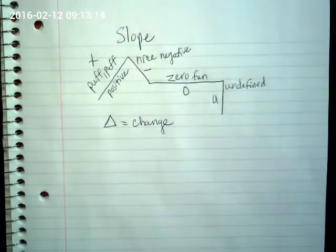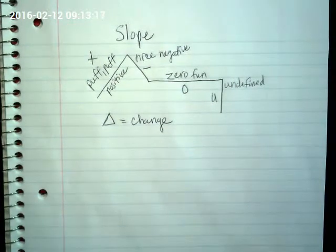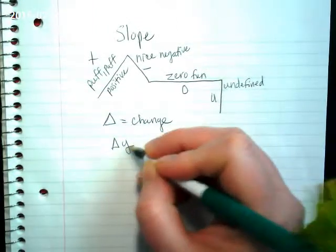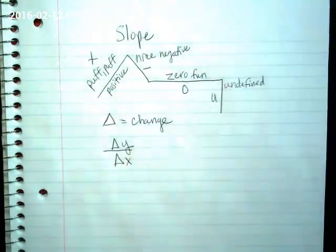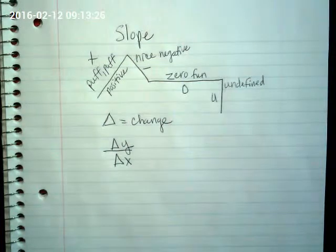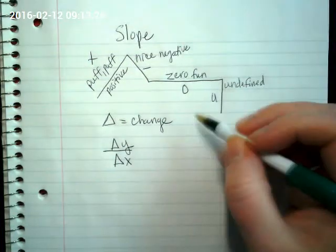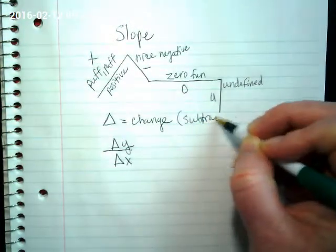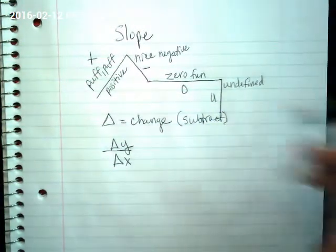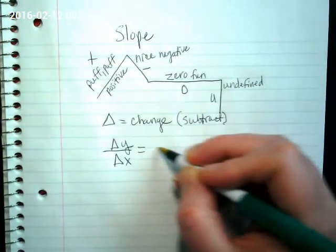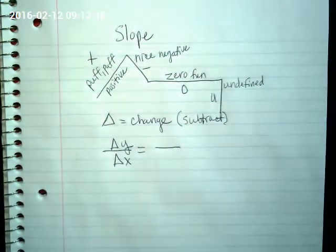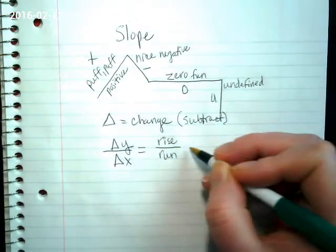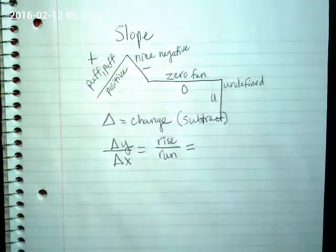We're going to use that symbol in making our slope, because slope is the change in y over the change in x. When I talk about change, I'm meaning that I'm going to be subtracting, or I can find it on the graph by doing what we call rise over run. Notice I'm saying that these are all equal to each other.